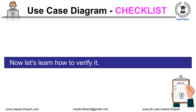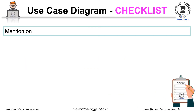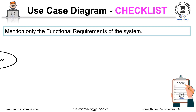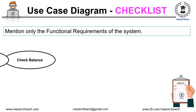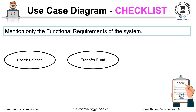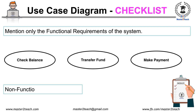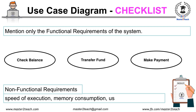In a use case diagram, only mention the functional requirements of the system — for example, check balance, transfer fund, make payment, etc. Check if there are any non-functional requirements in the use case or not. Non-functional requirements include speed of execution, memory consumption, user friendliness, etc.